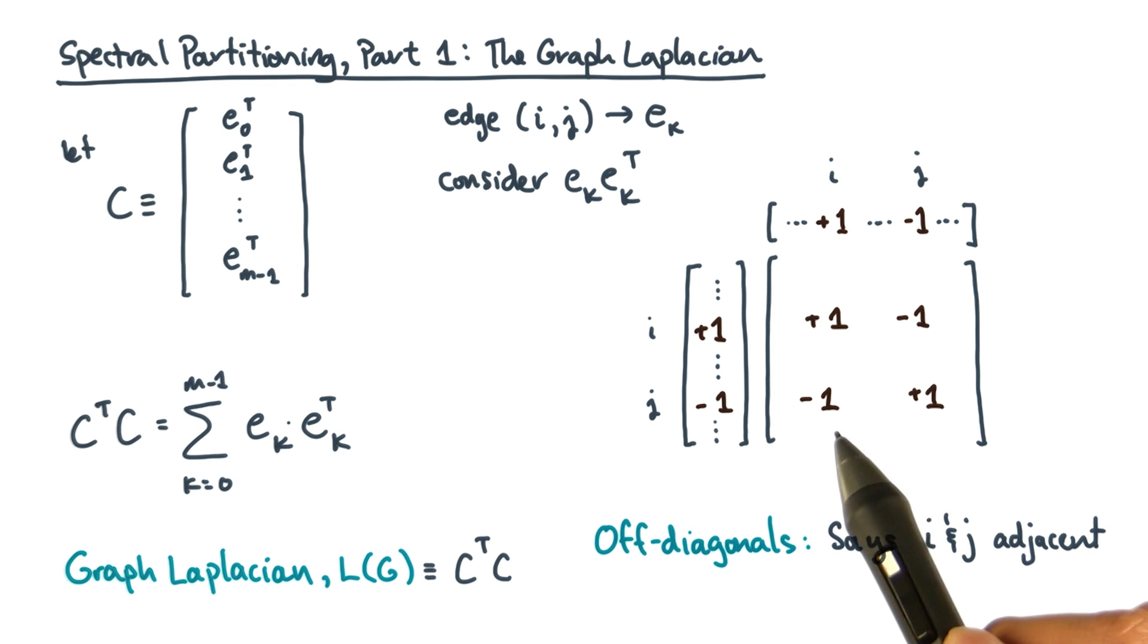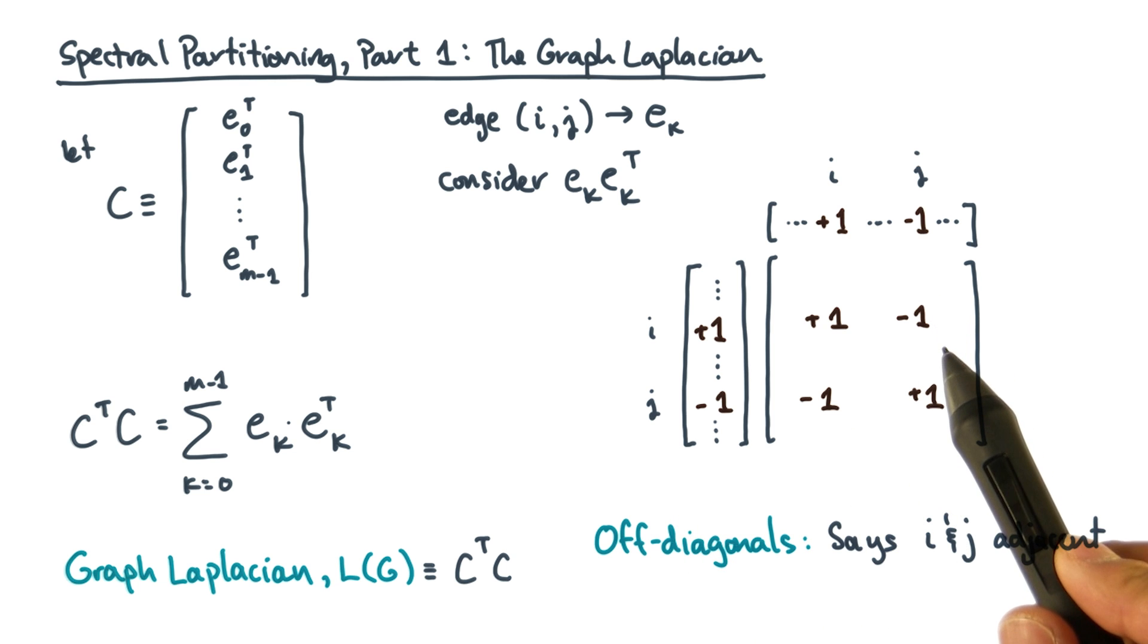However, since both j comma i and i comma j are minus one, you've effectively lost the direction information. Put another way, the graph Laplacian is telling you something about the undirected form of the original graph in the event that the original graph was directed.